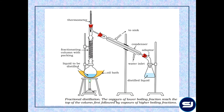In fractional distillation, vapors of the lower boiling fraction reach the top of the column first, followed by vapors of higher boiling fractions. Over a period of time there is a possibility that the higher boiling liquid also travels up and starts condensing, meaning the distilled liquid might contain impurities of the high boiling component. That is the reason fractional distillation needs to be repeated several times to get the pure distilled liquid.